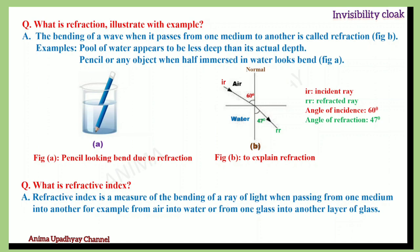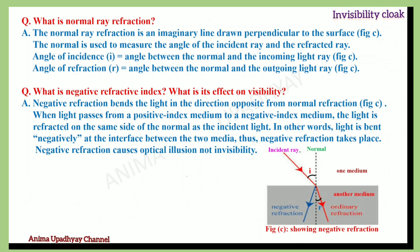What is refractive index? Refractive index is a measure of the bending of a ray of light when passing from one medium into another — for example, from air into water or from one layer of glass into another. What is a normal ray in refraction? The normal is an imaginary line drawn perpendicular to the surface. It is used to measure the angle of the incident ray and the refracted ray — angle of incidence I and angle of refraction R.